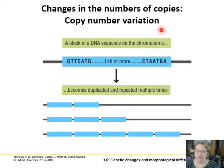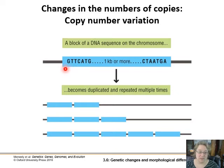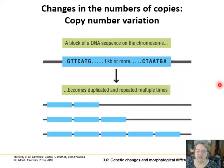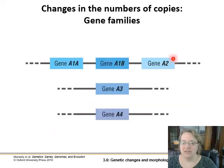Going back to copy number variation, that block of DNA — not just at the base level, but almost thousands of bases — can become duplicated and repeated over time, massively extending the length of the chromosome. This gives you lots of different copies of genes for selection to work with, and that is how we get gene families, when a very similar gene gets copied over and over.